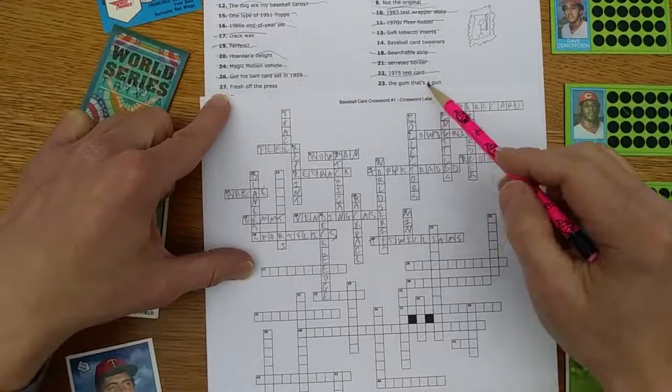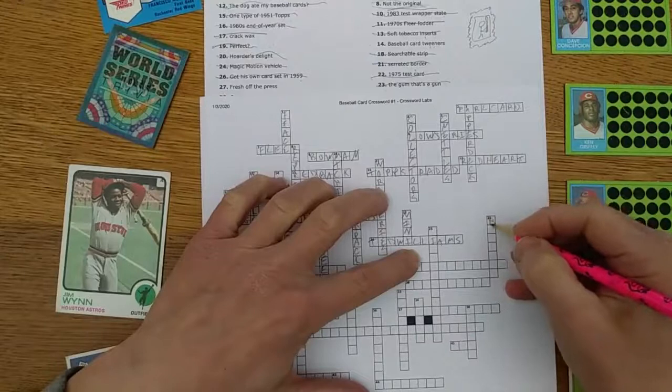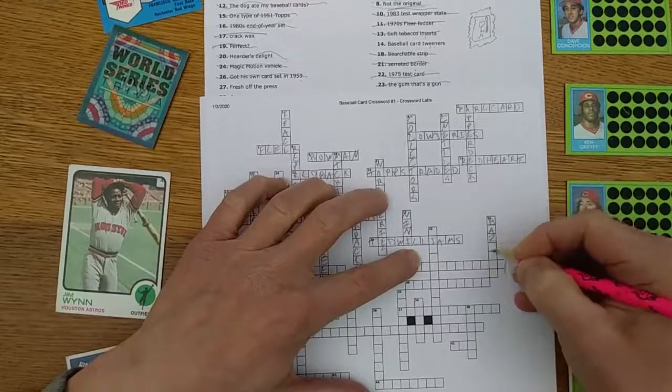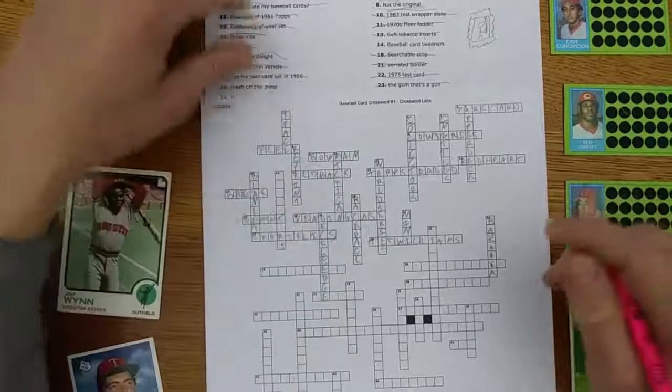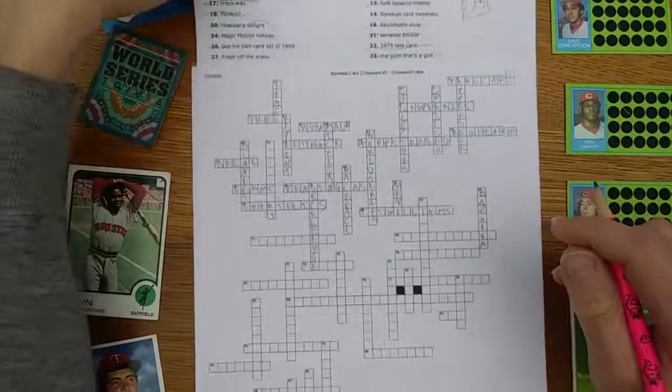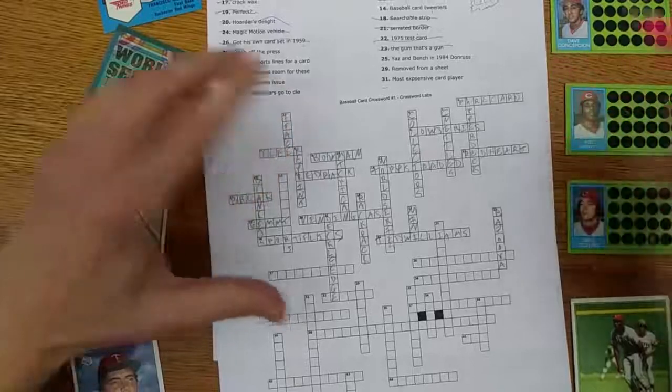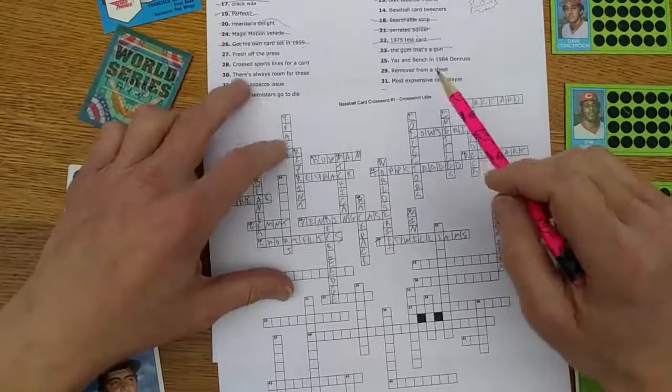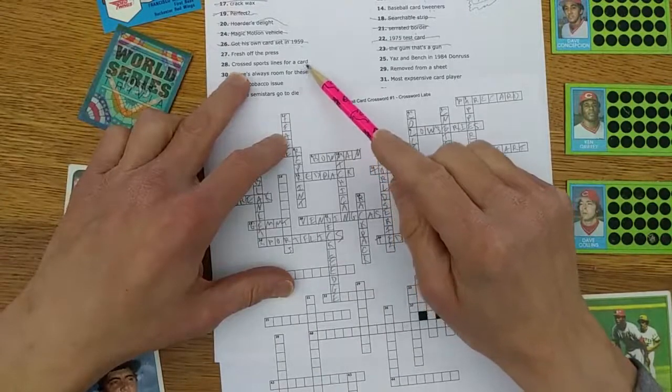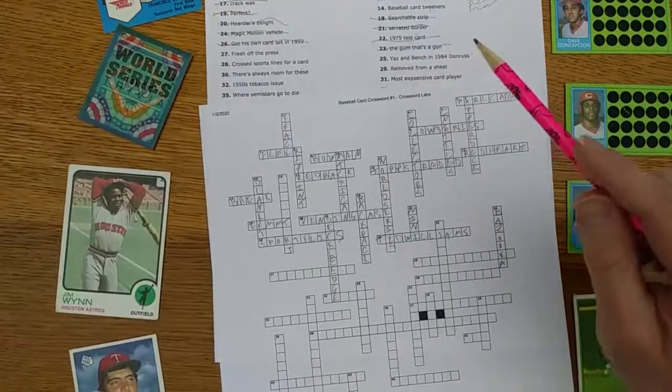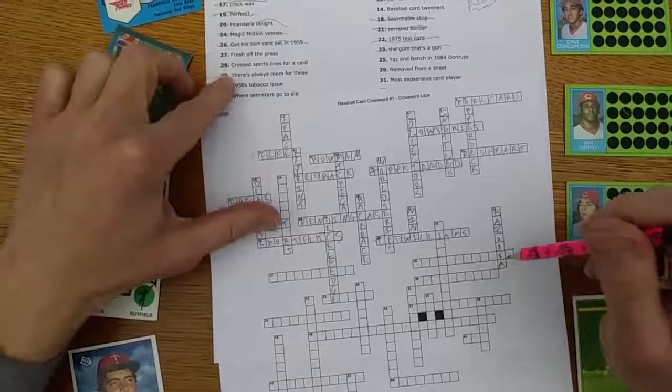The gum that's a gun - that was an easy one for me: Bazooka. One of my favorite cards ever and one that I've always admired from afar - I don't think I've ever seen one in person - is the '59 Bazooka Hank Aaron card. Just a beautiful shot of him and rare card, has a lot going for it. Crossed sports lines for a card - not sure about that one.